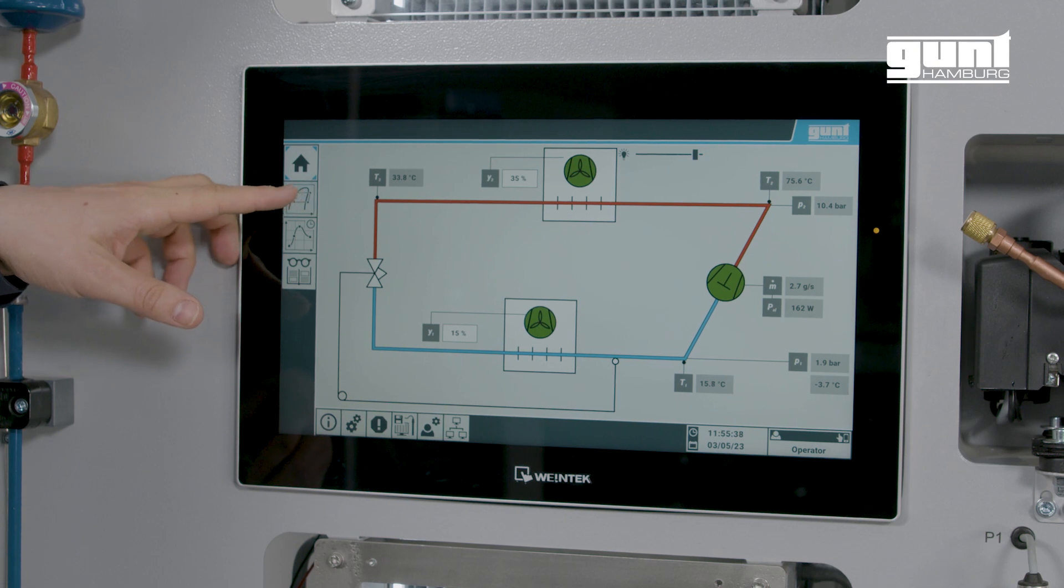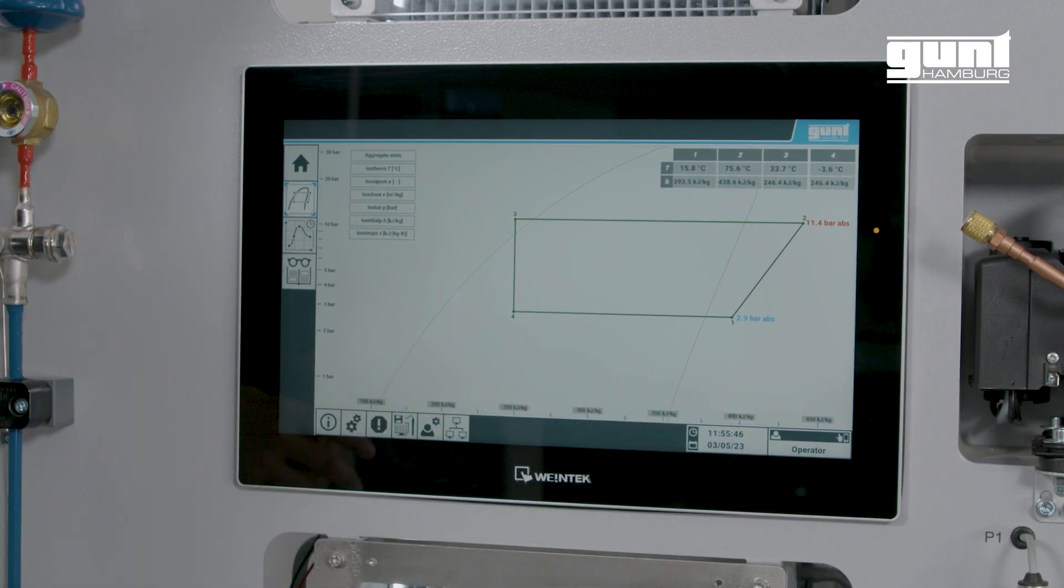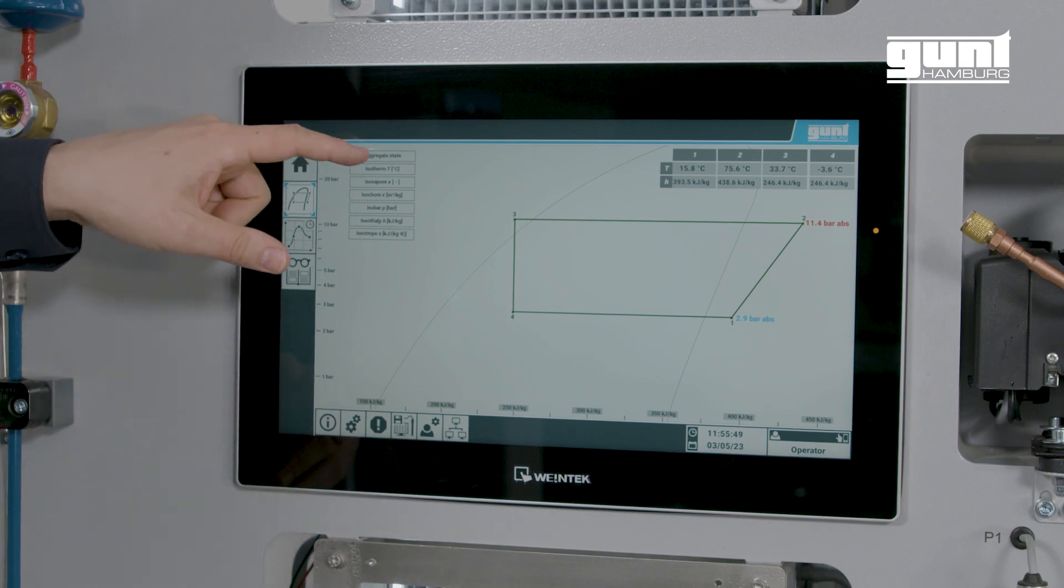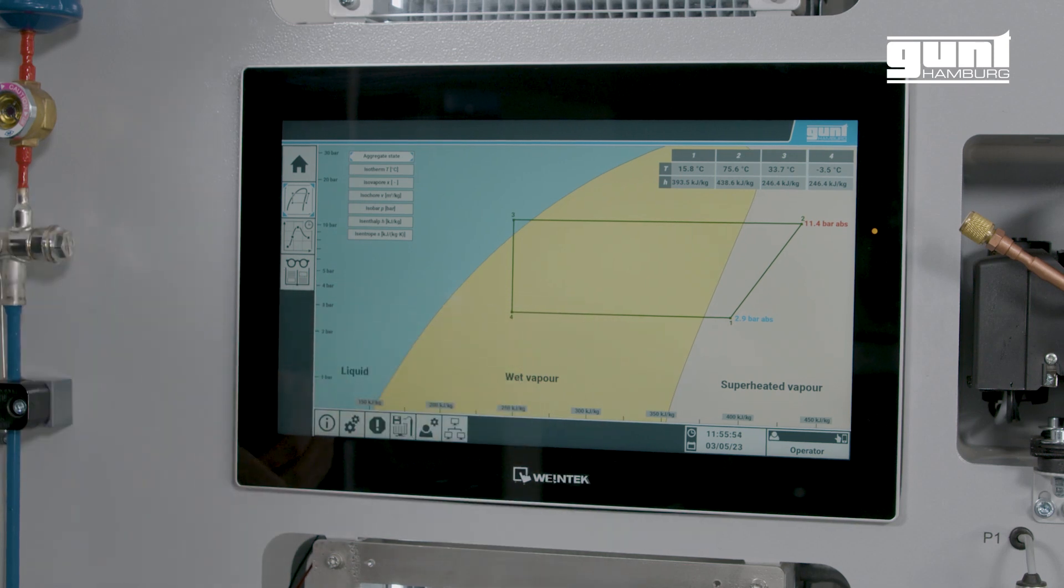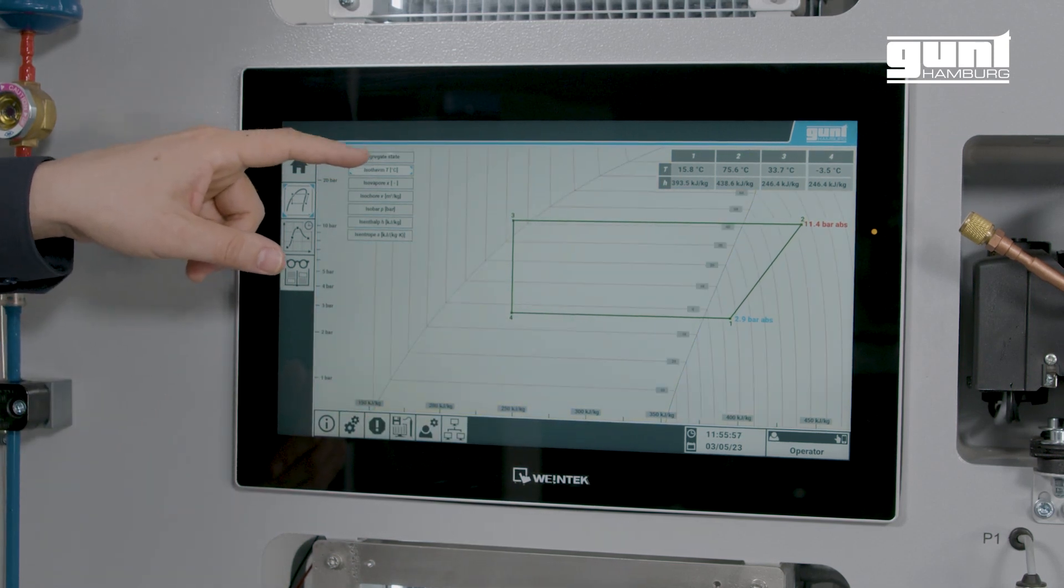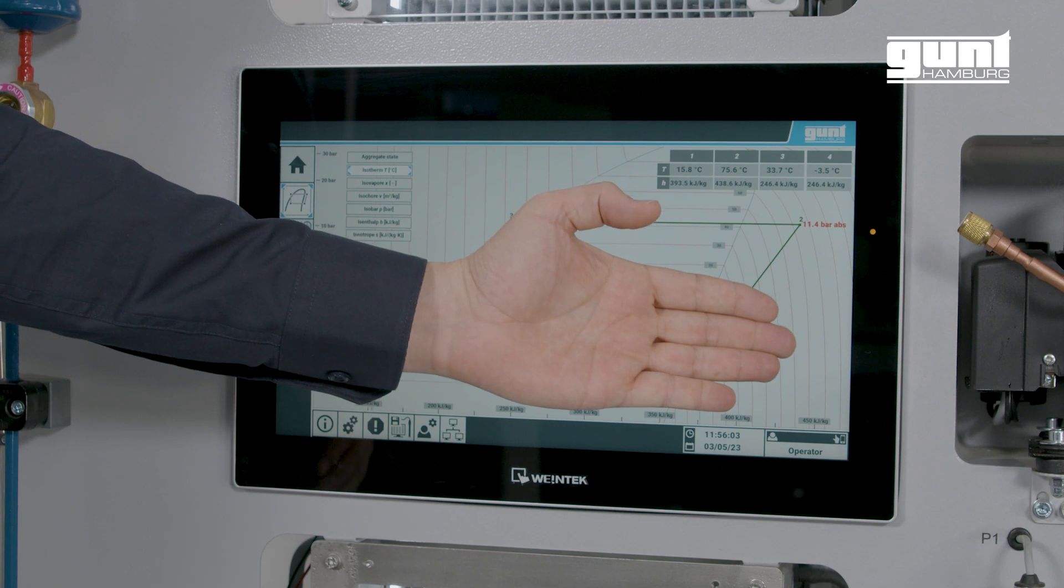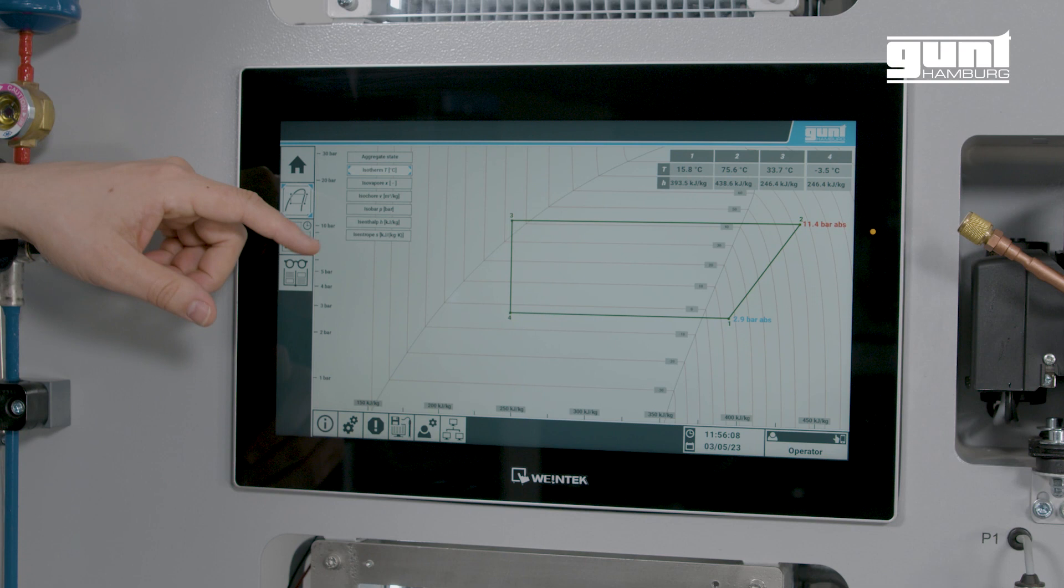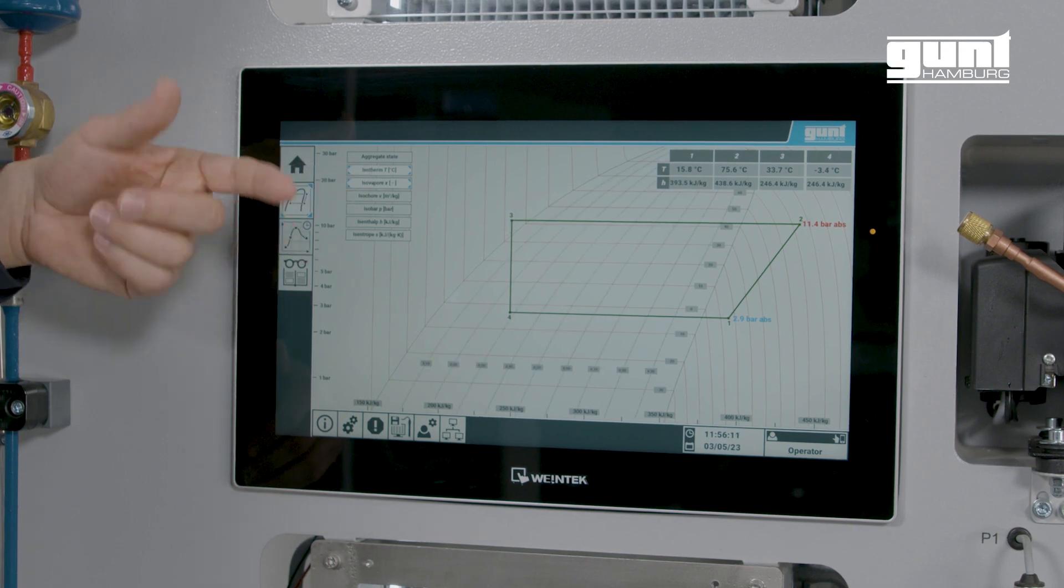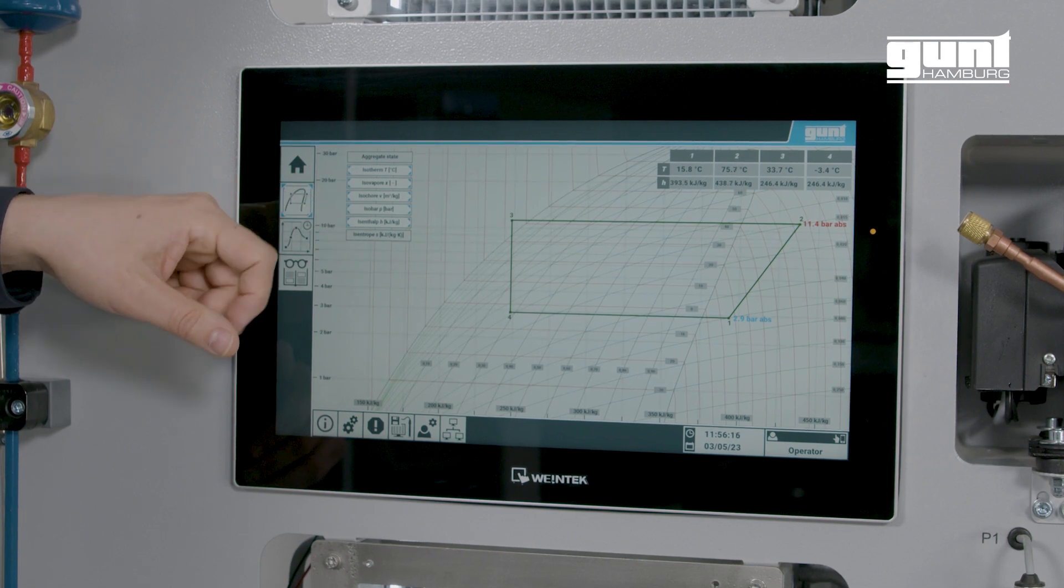And on the next page we have the log pH diagram. Here the thermodynamic cycle of the actual operating condition is shown in real time. The specific enthalpy can be read off directly. And for a low threshold start it is advisable to query the aggregate states. Then we can continue with the thermodynamic changes of state where one variable is always constant, for example the isotherms. We can follow the same approach for all other thermodynamic state changes as well, allowing us to explore how different variables behave when one of them is held constant.